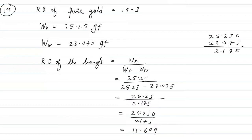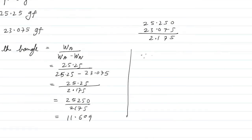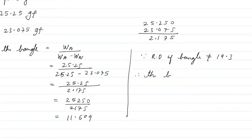The relative density is 11.609. Since the relative density of the bangle is not equal to 19.3, which is the relative density of gold, therefore the bangles are not made of gold.